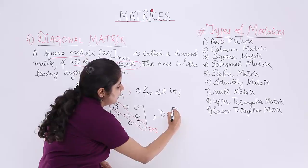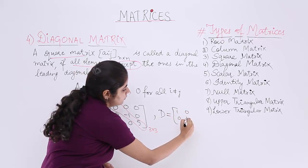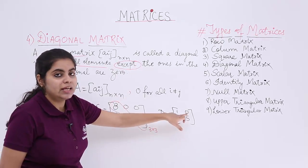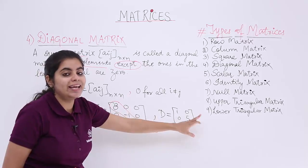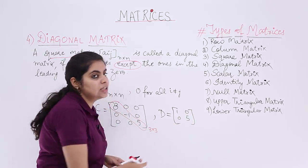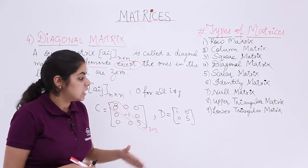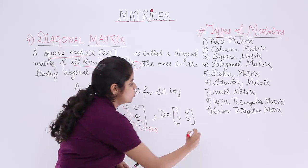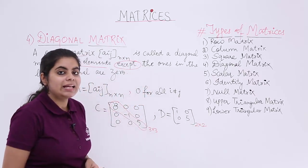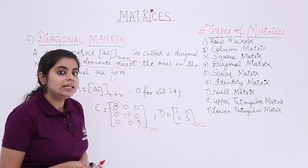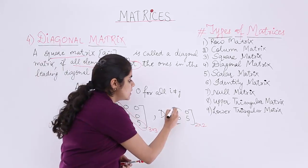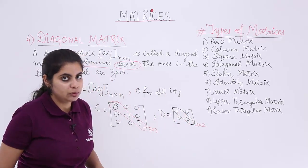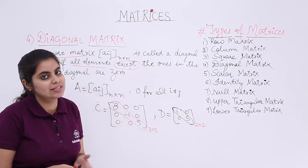Another example: suppose we have a matrix D with elements 1, 0, 0, 5. So a11 = 1, a12 = 0, a21 = 0, and a22 = 5. The order is 2 by 2, since there are 2 rows and 2 columns. The leading diagonal or principal diagonal is 1 and 5, which are not equal to 0, and the rest of the elements are 0 — so yes, this is a diagonal matrix.